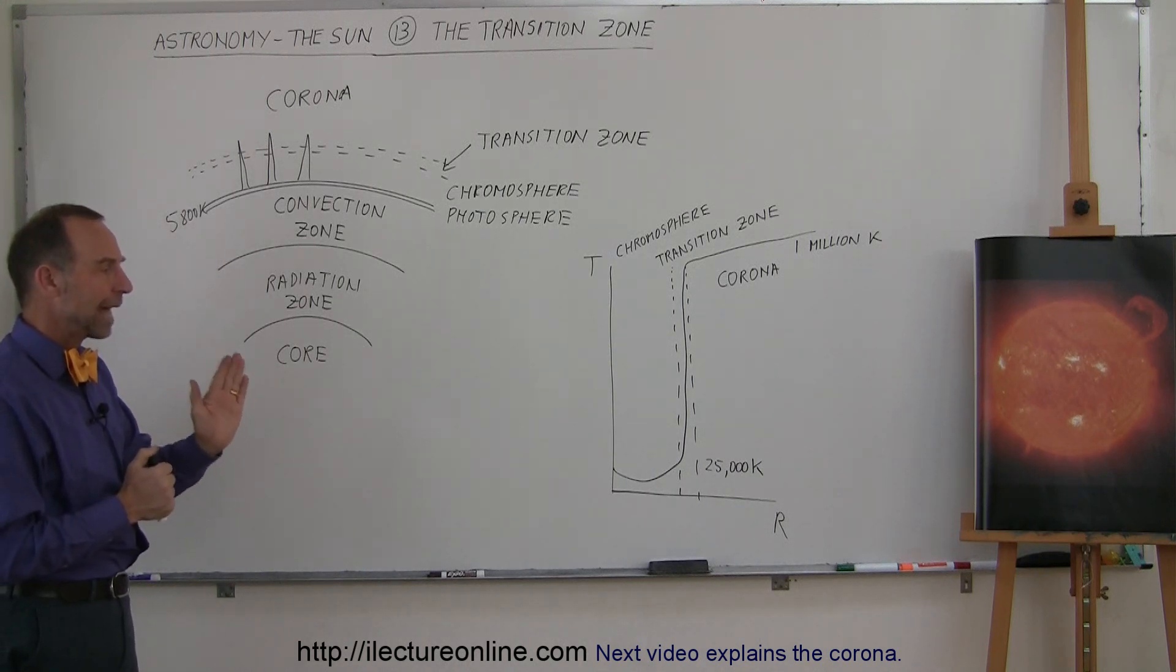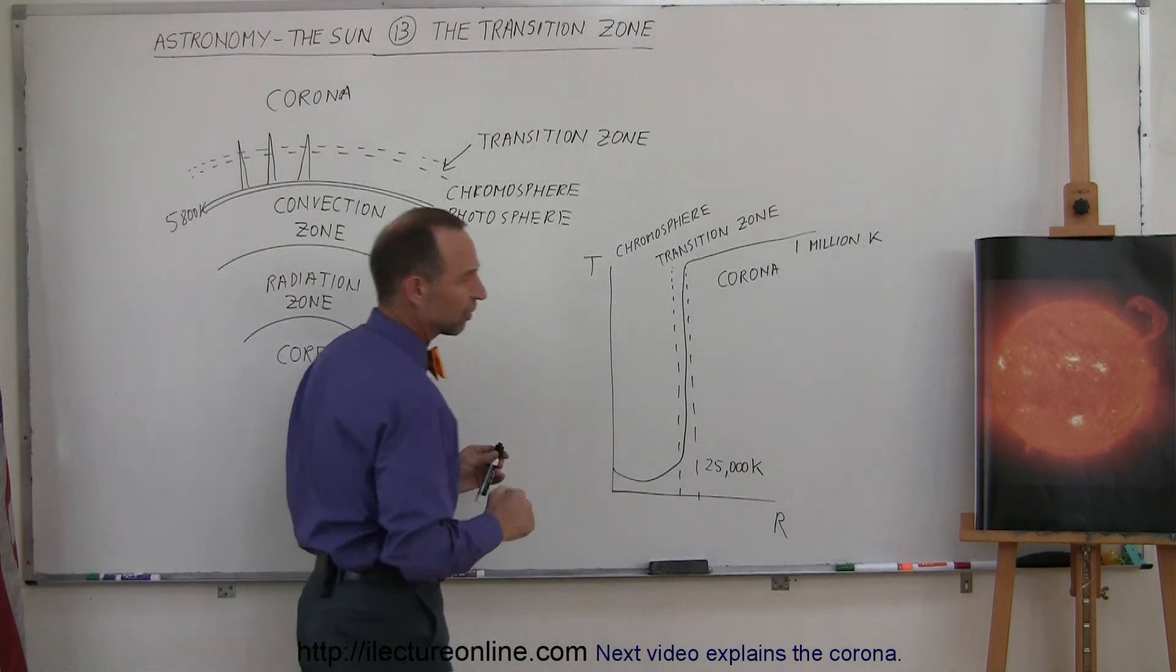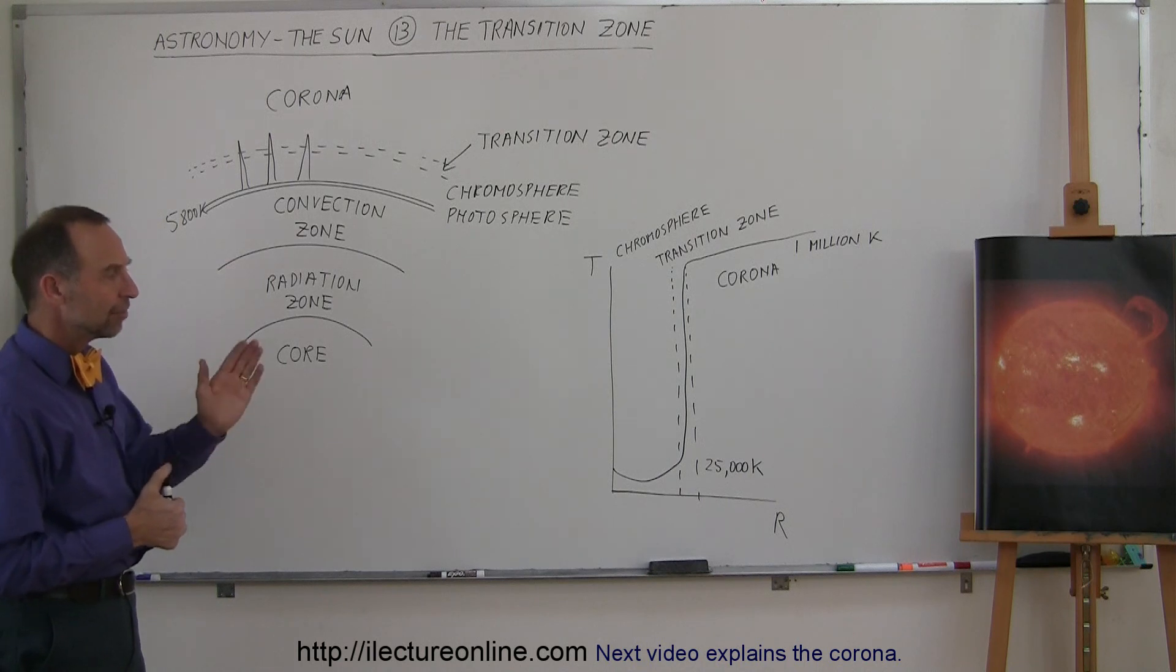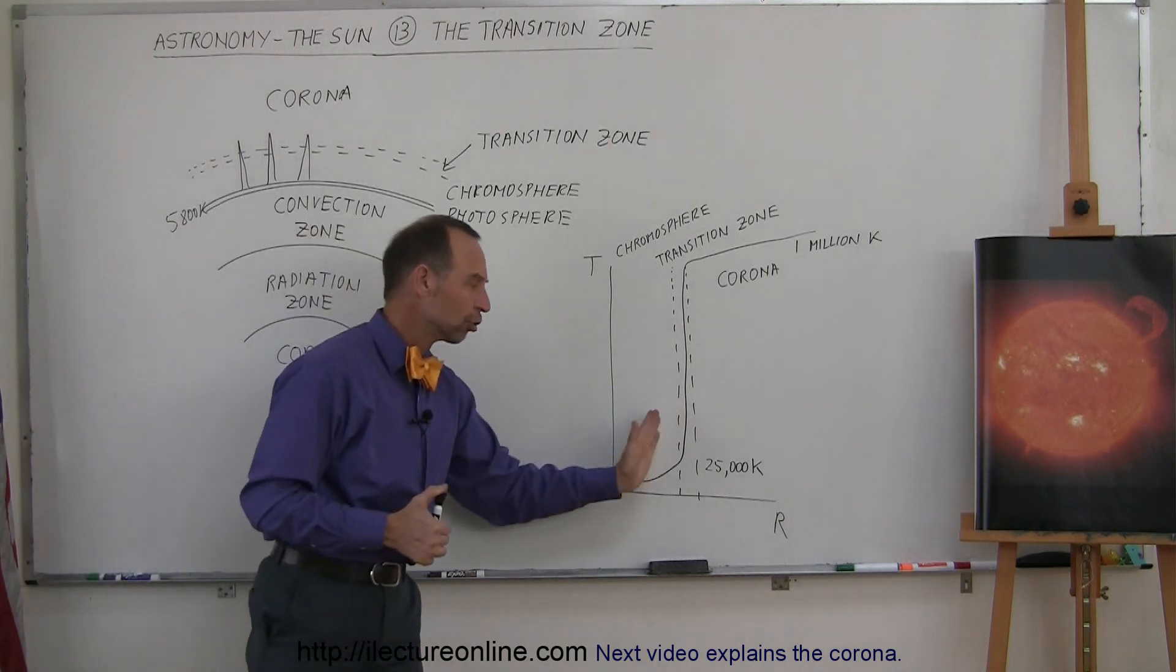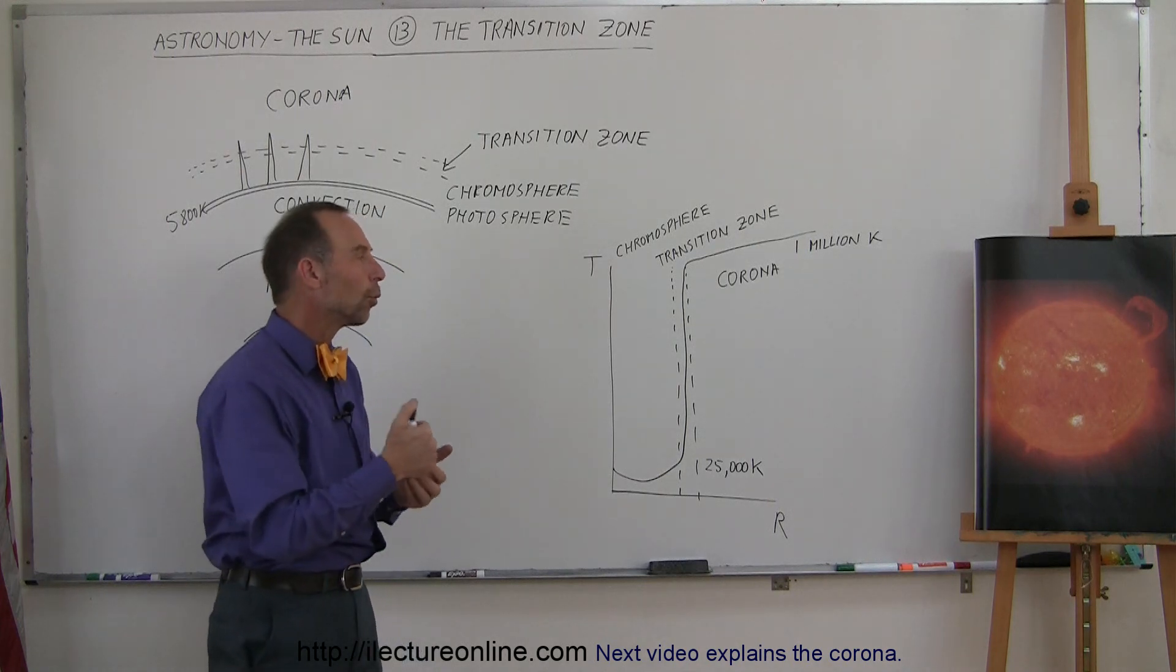We just know that it happens at that distance of probably several thousand kilometers away from the surface of the sun. We don't know what it is. The fact that we know it happens over such a short distance gives us some clues as to why it may happen.